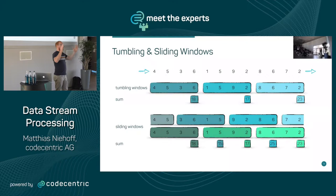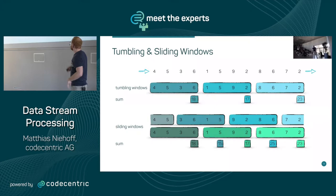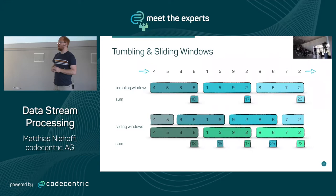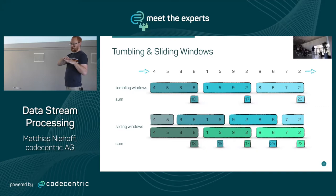The tumbling window just takes one window and the next window continues immediately after. With four-second windows: the first window covers seconds 1–4, then 5–8, then 9–12, and we do a sum on the values. The sliding window doesn't move by the full window size but by a fraction of it — for example, using a four-second window moved every two seconds, giving overlapping windows. This is how sliding averages can be computed.